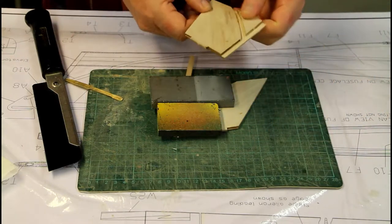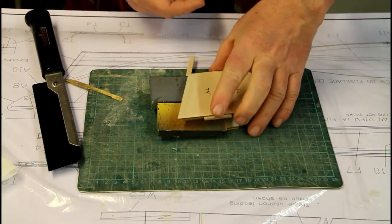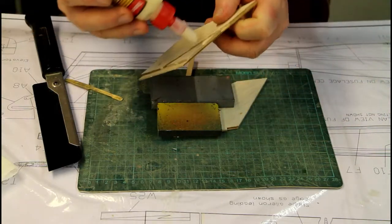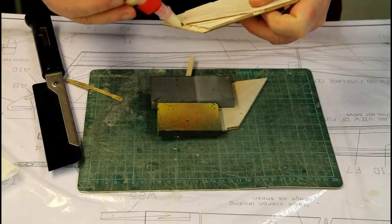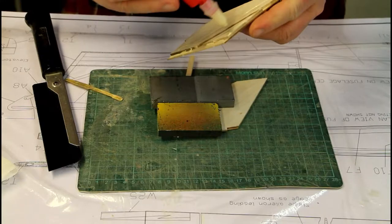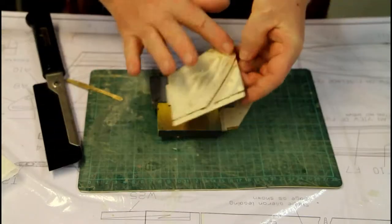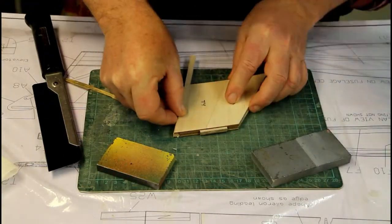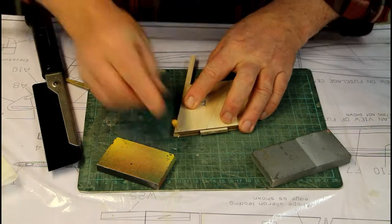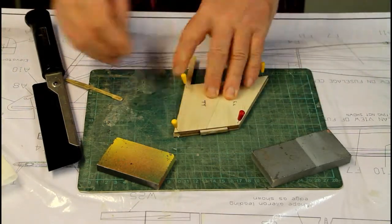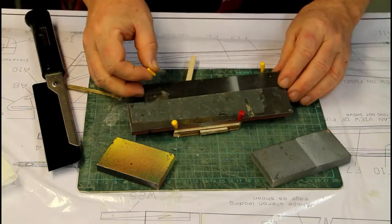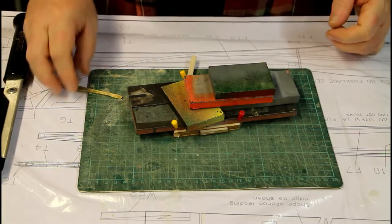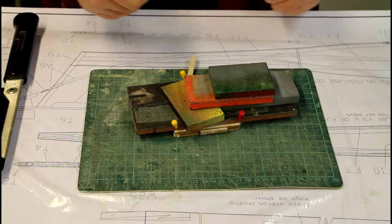Now I'm going to take this part here and glue it down there. So I'm just putting glue on this. Now this will have to dry before I start sanding it.